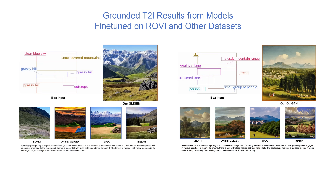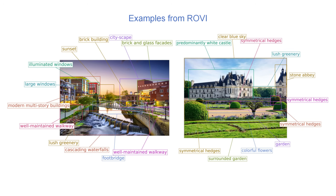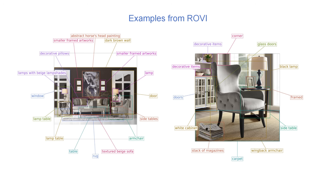Instance-grounded text-to-image generation allows users to specify not just what objects appear, but exactly where they should be placed using bounding boxes and labels. This level of control is crucial for many practical applications. However, this task requires high-quality training data with detailed captions and precise bounding boxes. Existing datasets fall short — they're mainly designed for detection, not generation, resulting in low image quality, limited vocabularies, and incomplete captions that miss many visible objects.